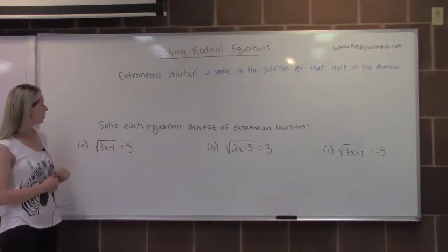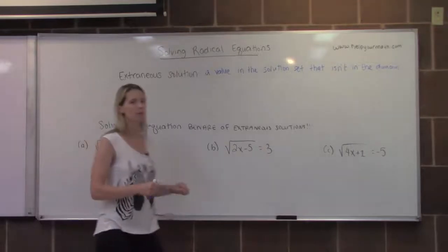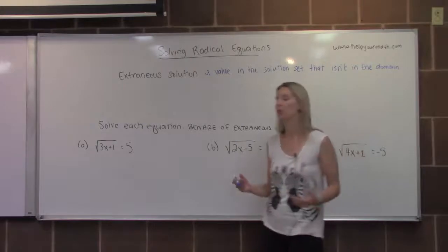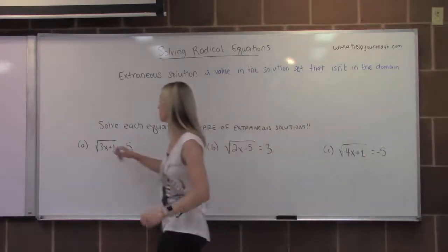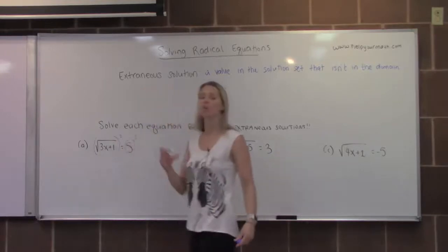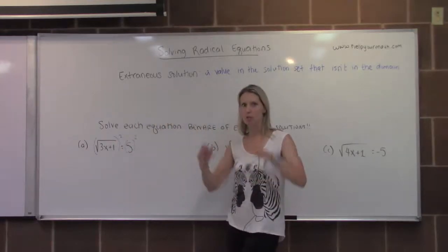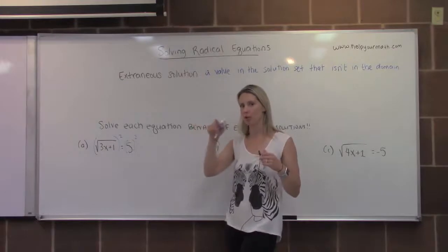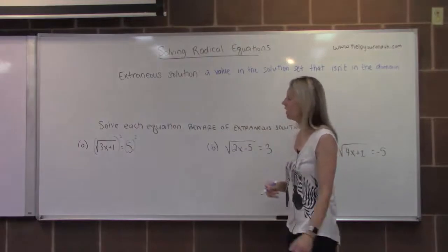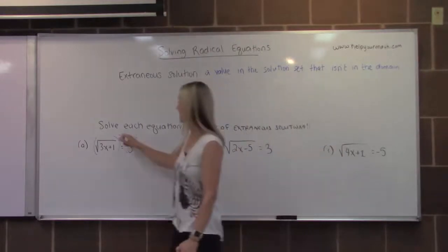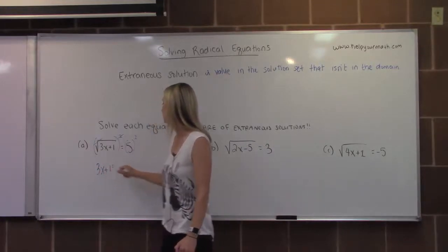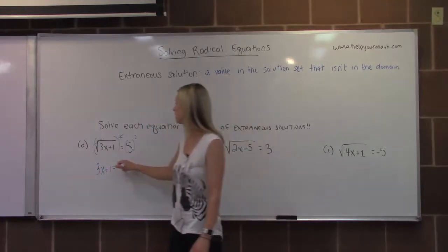Here we have the square root of 3x plus 1 is equal to 5. To get the variable out of the radical, I can square both sides. When you square things for an equation, you square the entire side — not individual terms. The entire left side and entire right side get squared. When I square the left side, the square and the square root cancel, leaving 3x plus 1. On the right-hand side, 5 squared is 25.